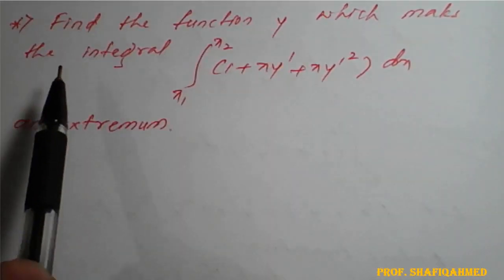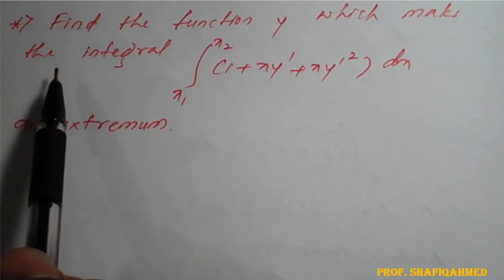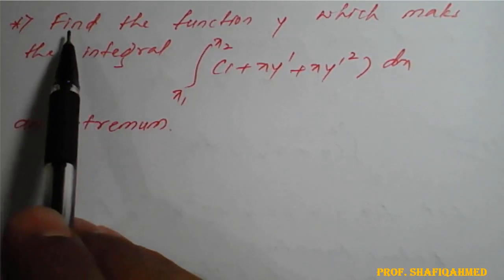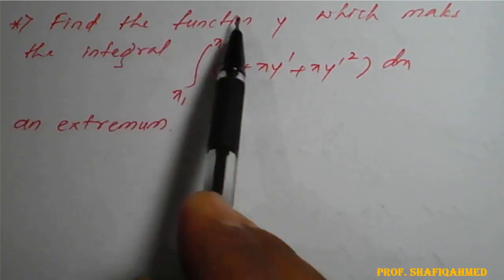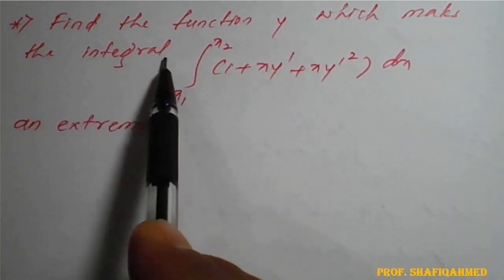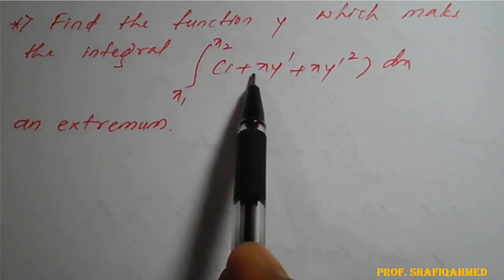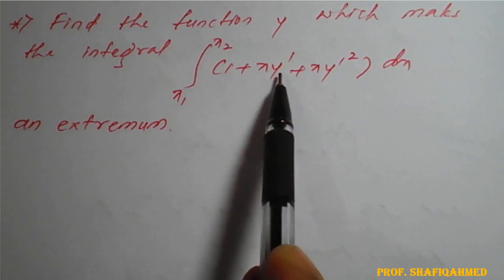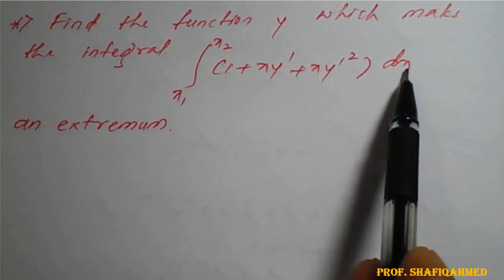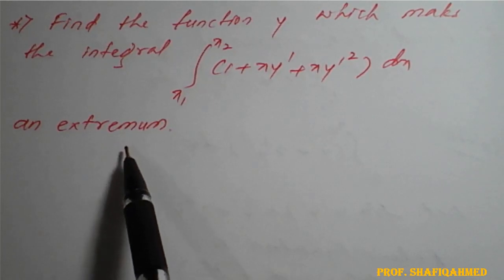Hello students, we will see the problems on calculus of variation. The problem is: find the function y which makes the integral, integration x1 to x2 of (1 plus x y dash plus x y dash square) dx, stationary.